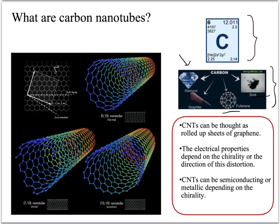All the electronic and optical properties of a nanotube depend on this chirality. Carbon nanotubes can either be semiconducting or metallic based on this chirality.